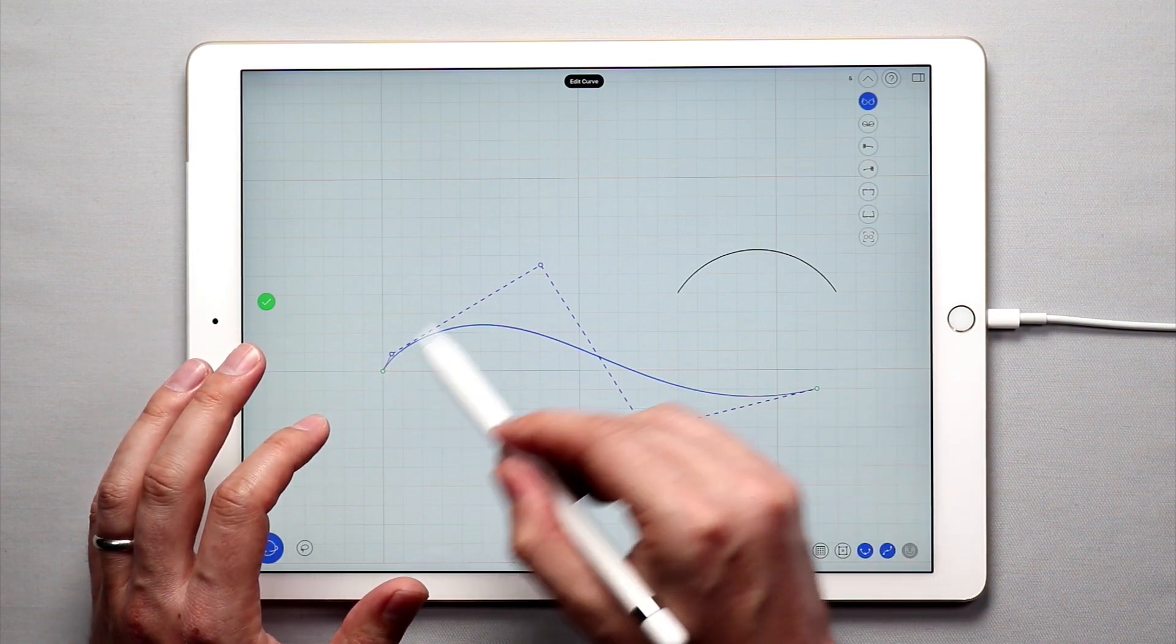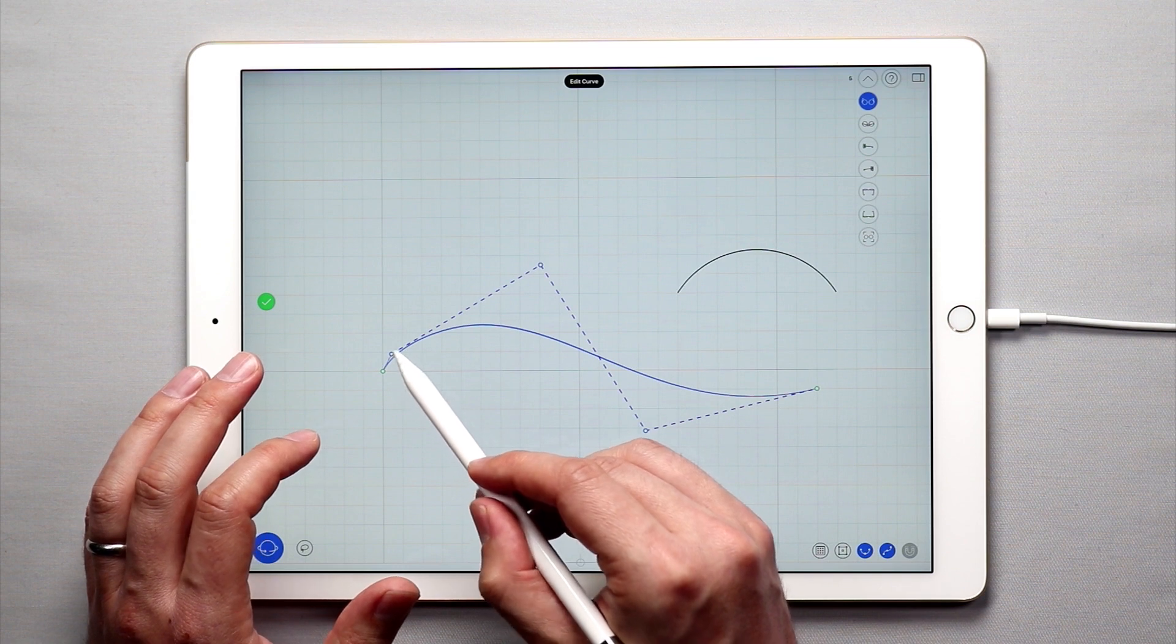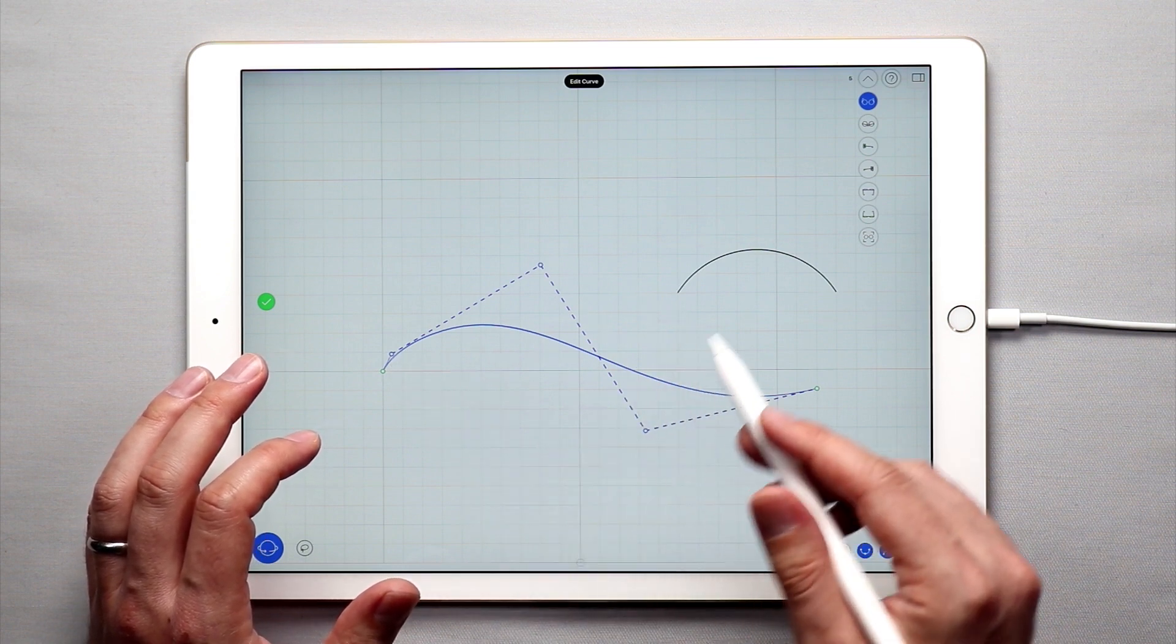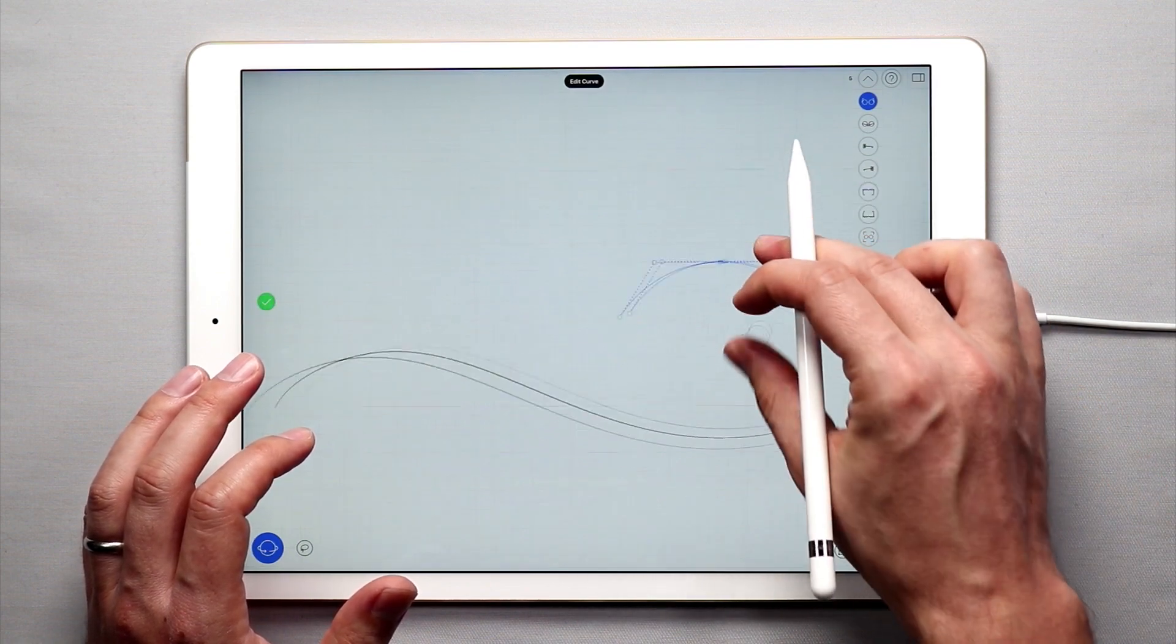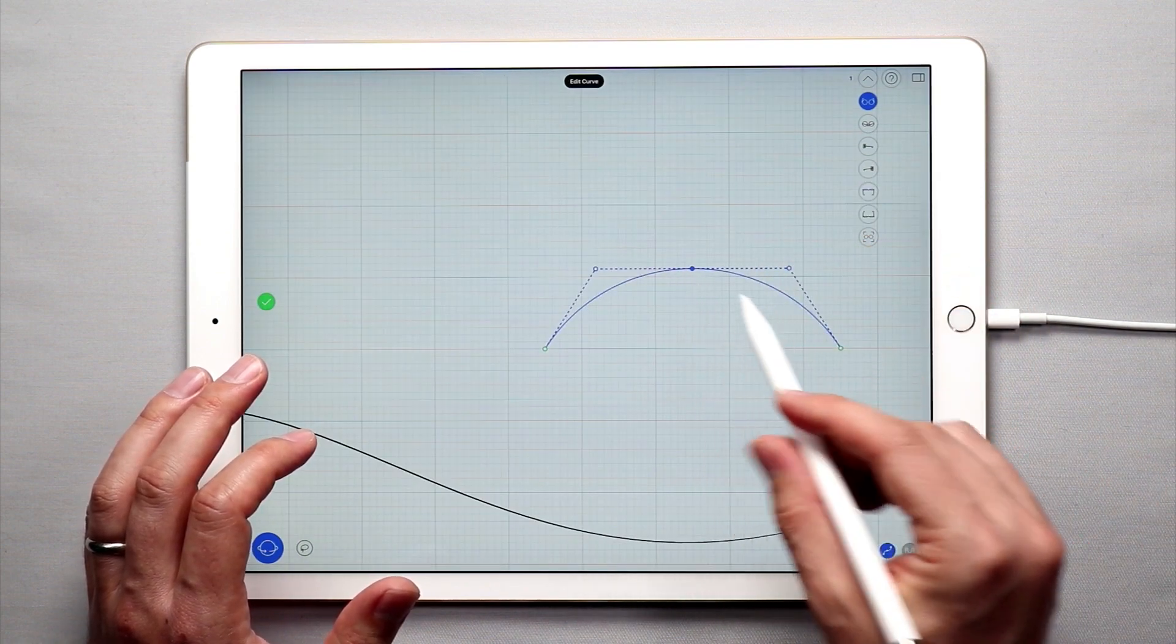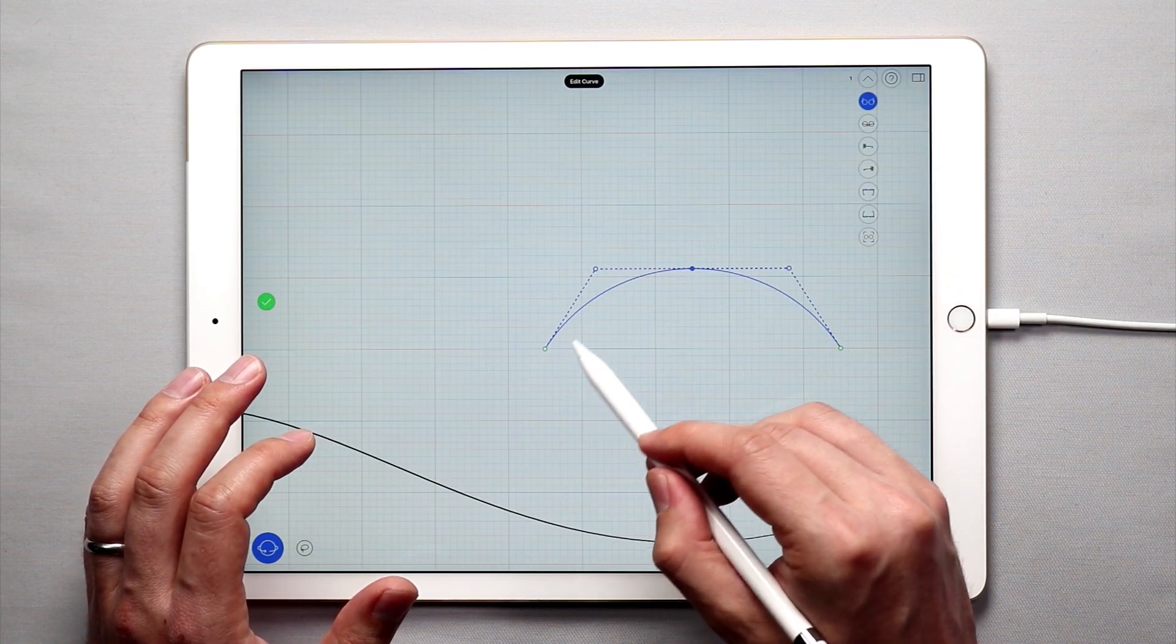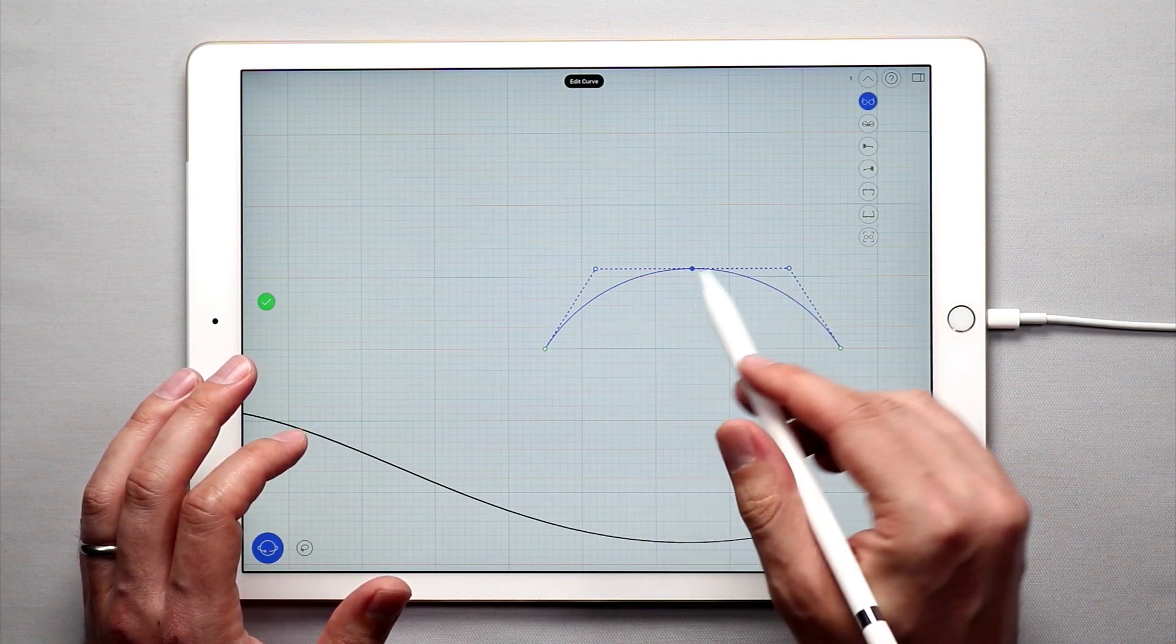The points in between the endpoints on a curve are blue with a white center. Sometimes you'll see, for example on this curve, a solid blue point, and that basically shows where there are two curves that have been connected in the middle.